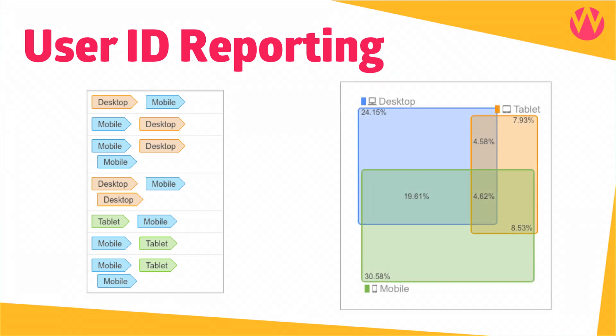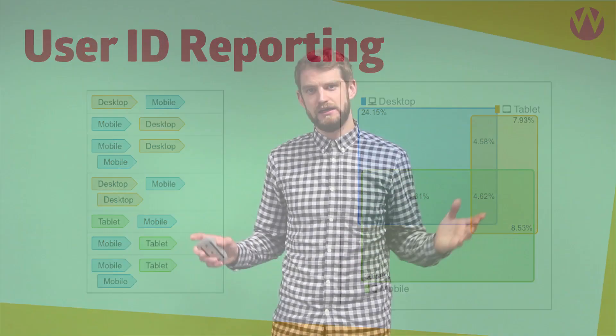There are also reports that show me the overlap between devices. For this particular client, I can see that 40% of conversions are generated from users using multiple devices. That's really interesting because if I look at my mobile conversion rate in isolation, like a lot of people do, it's not telling the full story. I might start to pull back on my bids thinking mobile conversion rate is particularly low — but actually, mobile might not convert well on its own, yet it's contributing to conversions on desktop and on tablets.